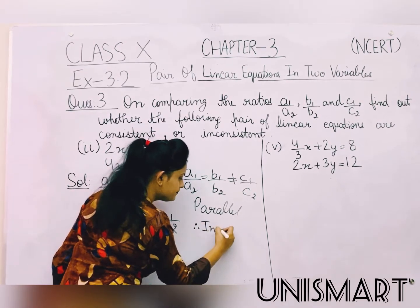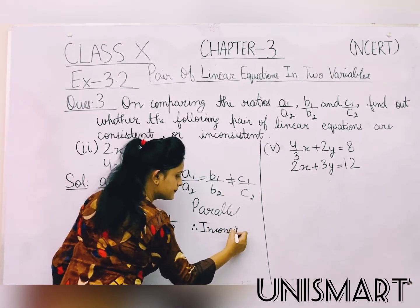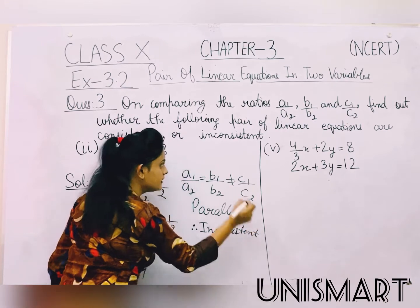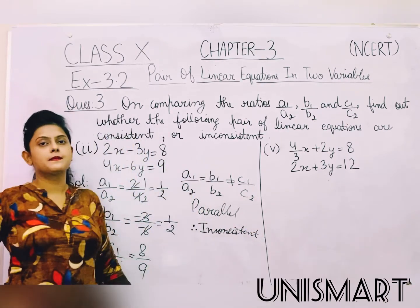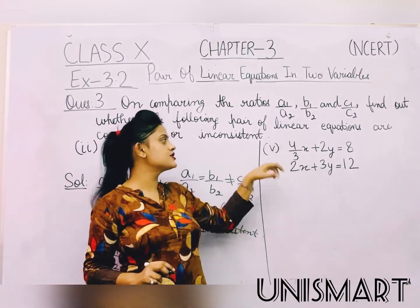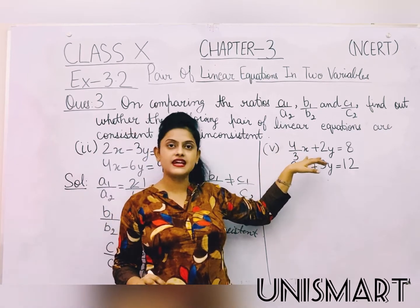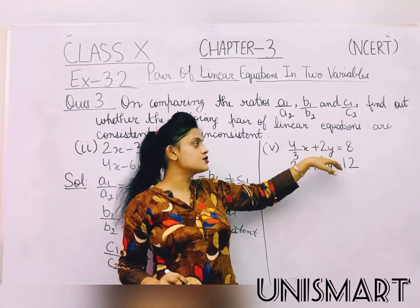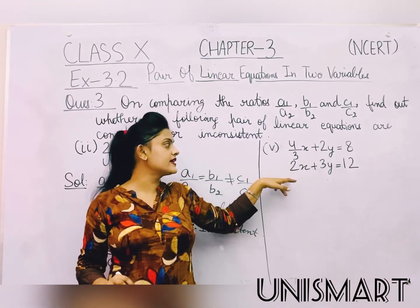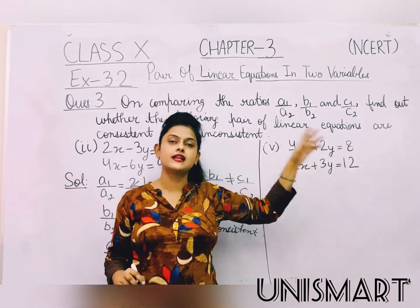Now moving to the fifth part. The fifth part equations are: (4/3)x plus 2y equal to 8, and the other equation is 2x plus 3y equal to 12.